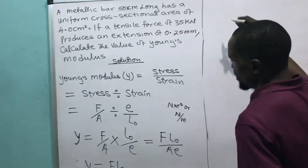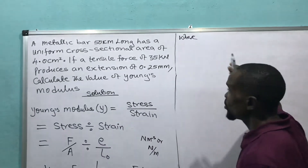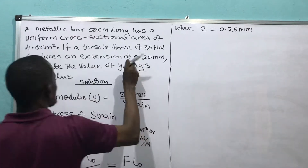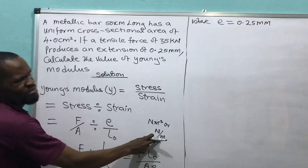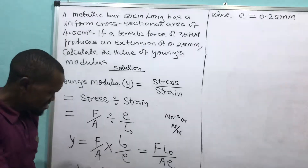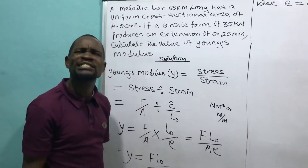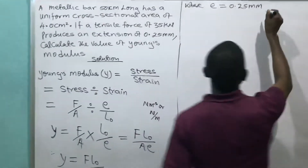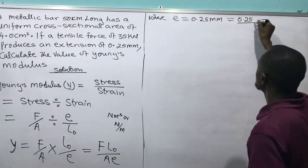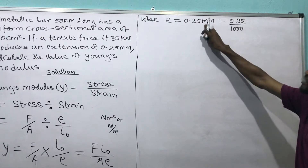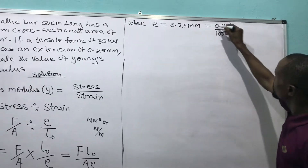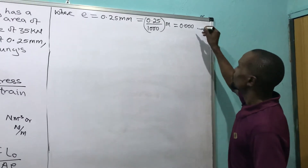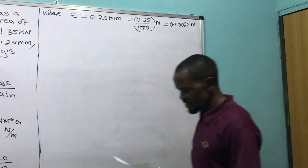Looking at the data they give me: extension e equals 0.25 millimeters. However, the unit of Young's modulus is Newtons per meter squared, so I cannot use millimeters — I must convert to meters. Dividing 0.25 millimeters by 1000 gives me 0.00025 meters.